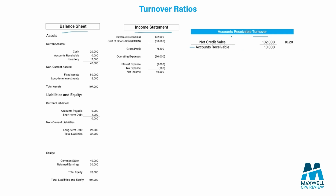Let's look at the AR turnover ratio. The name of the turnover ratio tells you what's in the denominator, and the numerator is the income statement item that causes that balance sheet item to change. When we make a sale on credit, we debit accounts receivable and credit sales revenue. Accounts receivable is $10,000 and our net sales are $102,000, assuming all sales are credit sales. This means we collected our AR 10.2 times throughout the year.